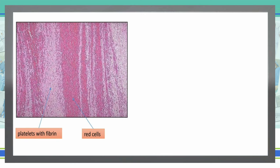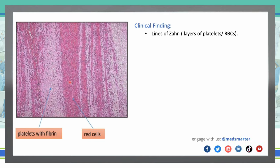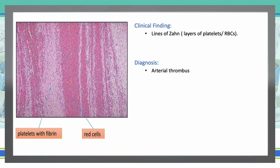Next, lines of Zahn — like layers of platelets and RBCs. This is characteristic of thrombi that appear when formed in the heart or aorta. They are visible as microscopic laminations produced by alternating pale layers of platelets mixed with fibrin, and a darker layer containing RBCs. Their significance: this indicates arterial thrombosis — thrombosis at a site of rapid blood flow. The diagnosis is arterial thrombosis.